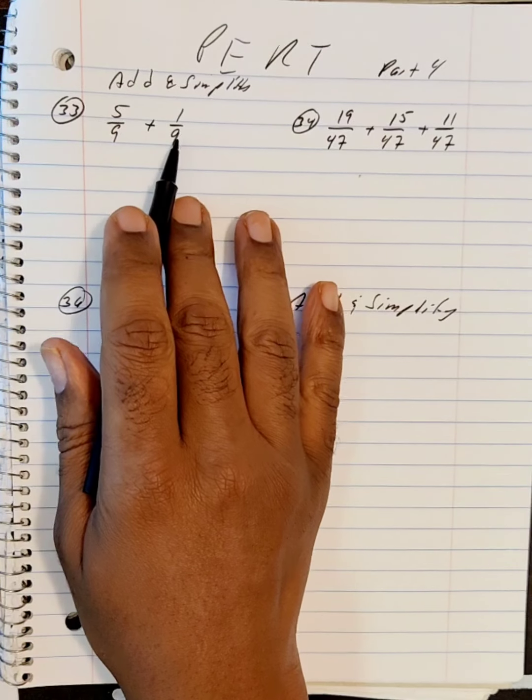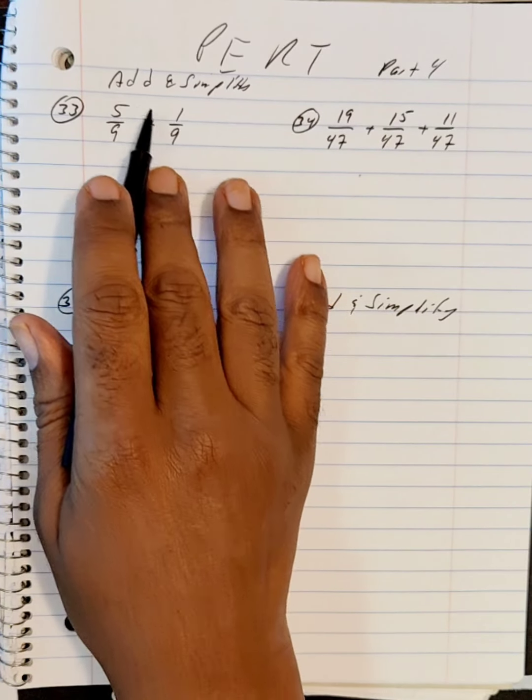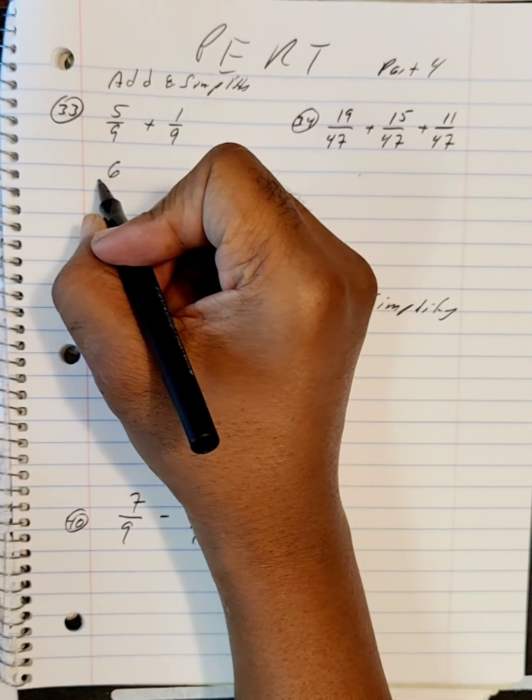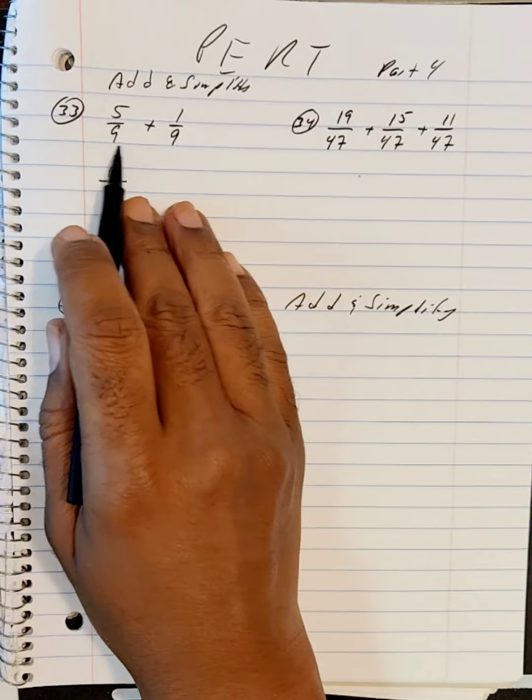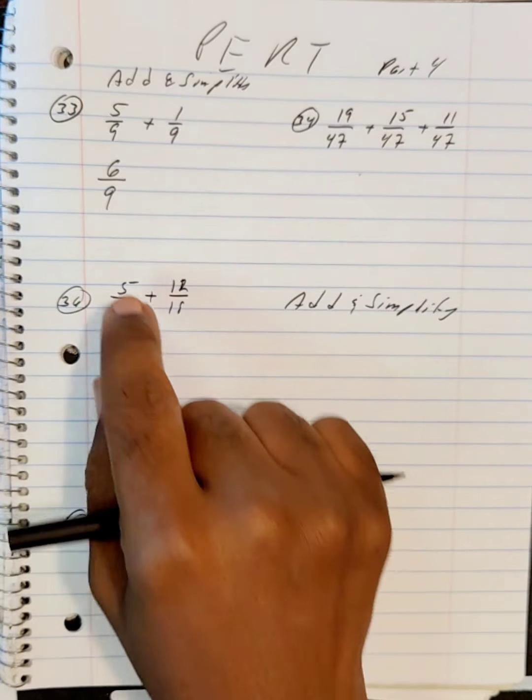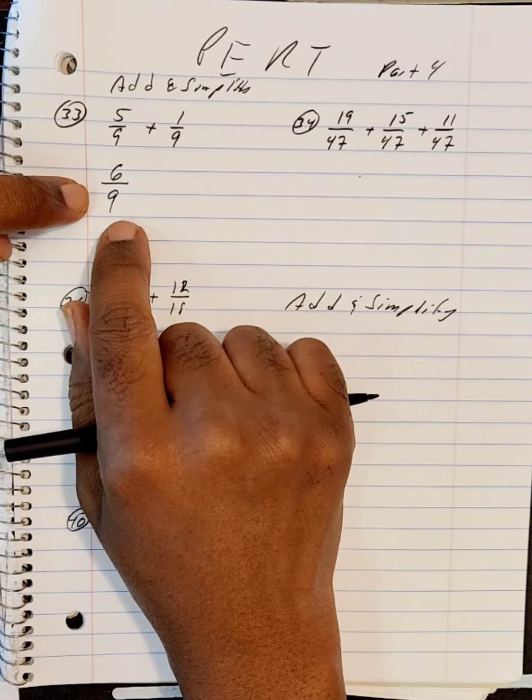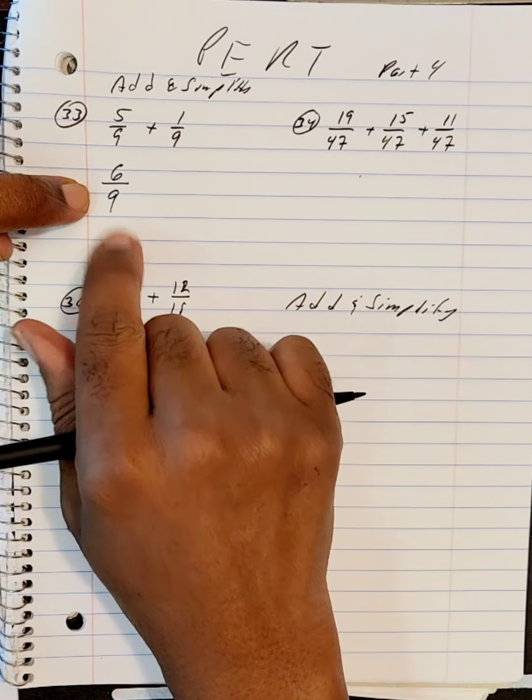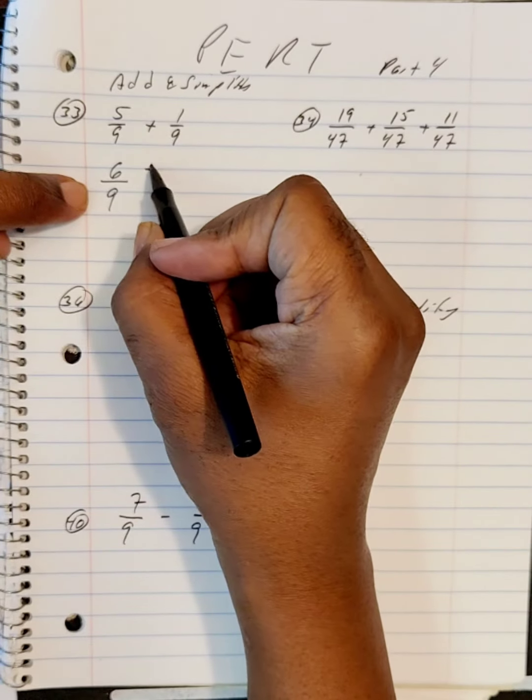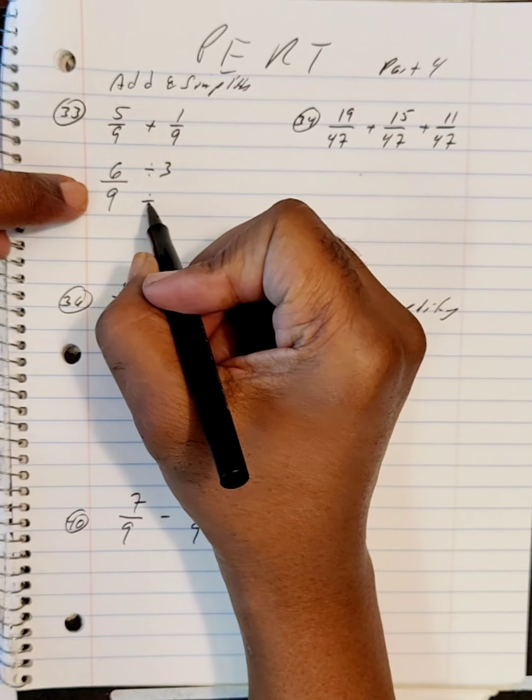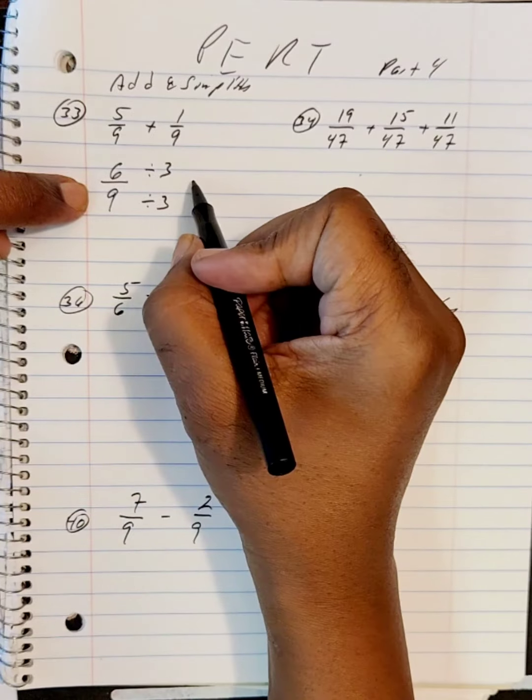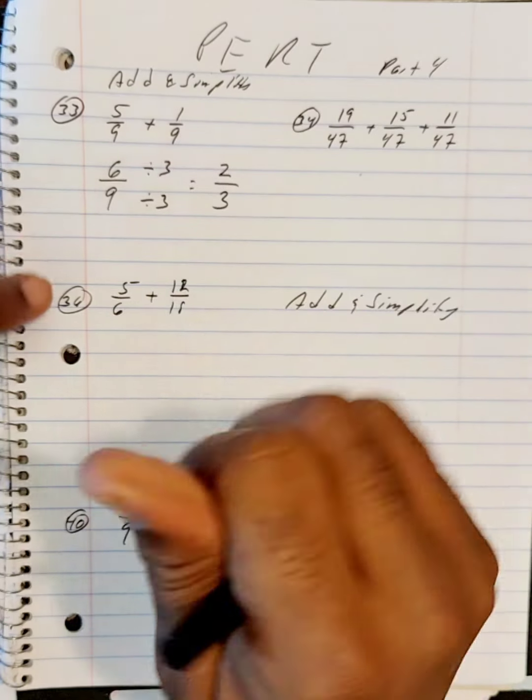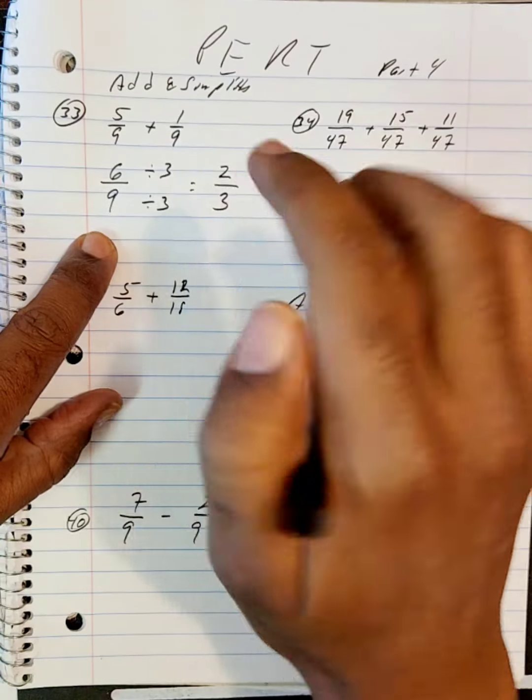So, five over nine plus one over nine. Since the denominators are the same, we can add the numerators. So five plus one makes six, and we use the same denominator, nine. Now, six over nine will be a choice, but since they say simplify, this would not be a good choice because it's not simplified. I'm going to divide both the numerator and denominator by three, and this will give us two over three. So we would choose this one.